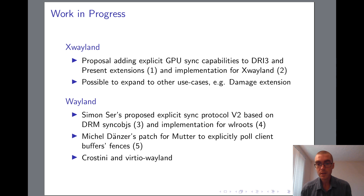These protocol additions introduce sync objects as a new protocol type, importable from a file descriptor, and allow specifying acquire and release timeline points on a given sync object for a PresentPixmap request. To avoid having to stall either the CPU or the GPU on the server side, we're able to export a sync file for the acquire point, add that to the server's event loop, and thus defer execution of the request until the timeline point is signaled. Then, after the pixmap has become idle on the GPU, it'll signal the release point. And while I've only added such support to the PresentPixmap request for now, having the basic sync object primitive in place could allow for other use cases — for instance, the damage add request could be augmented in a similar way to allow for GPU-synchronized damage reporting.